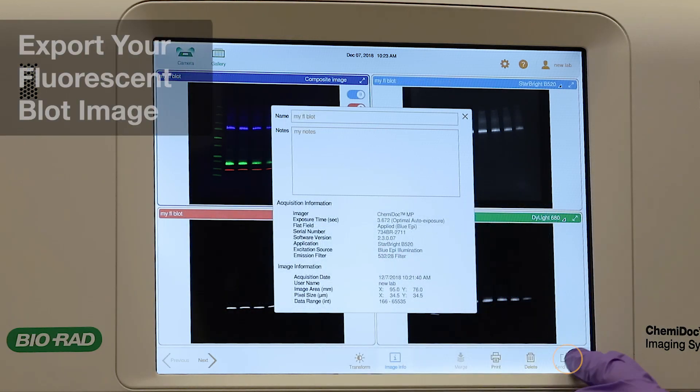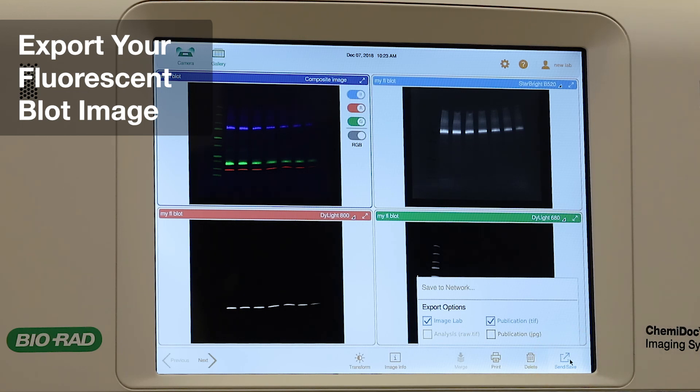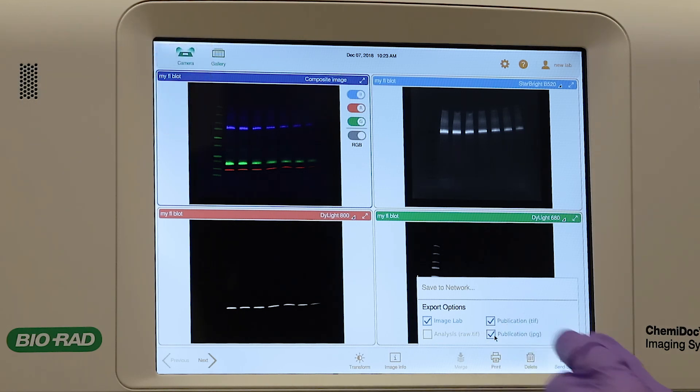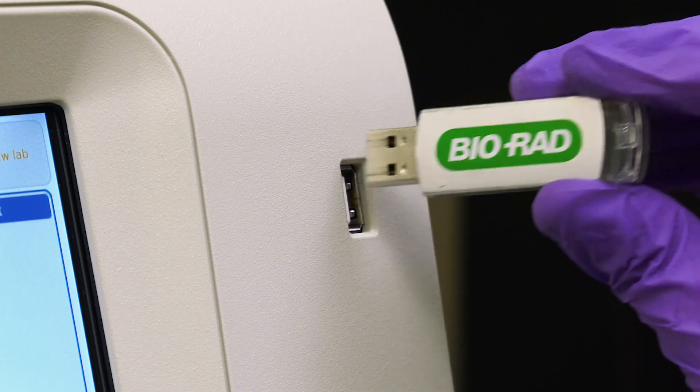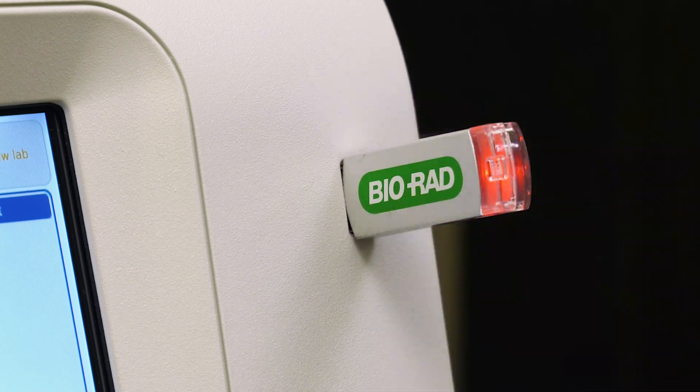Tap the Send Save icon to select the file format. You can also export images in multiple file types. Under Export Options, tap a file type and the destination, either saving to a USB drive or to a network.